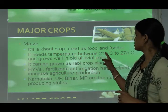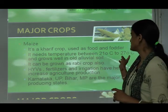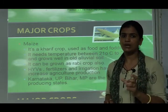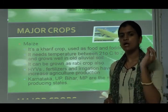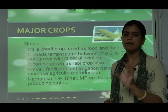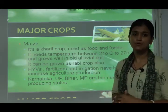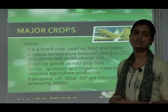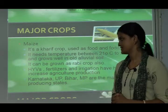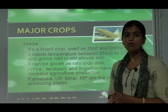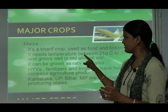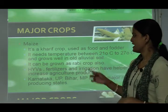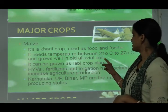Maize needs a temperature between 21°C and 27°C and grows well in old alluvial soil, which is bhangar soil. We had studied two types of alluvial soil — khadar and bhangar — and maize requires the bhangar type. It can also be grown as a rabi crop.